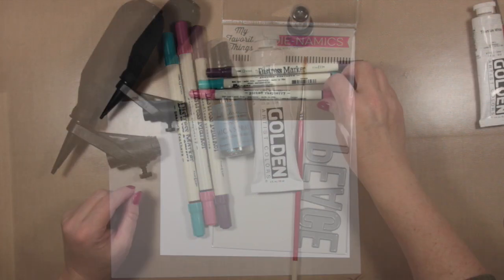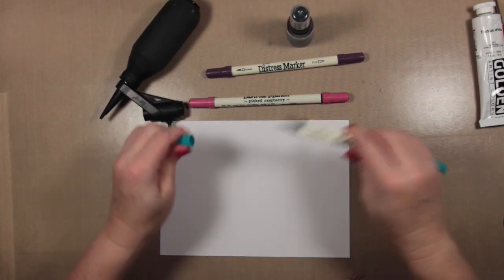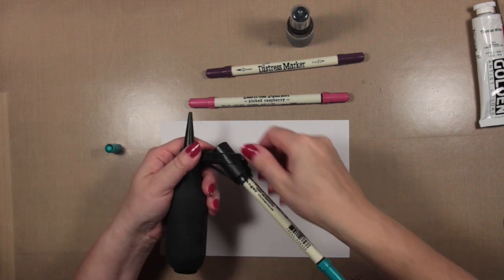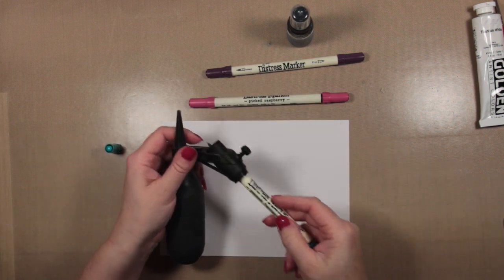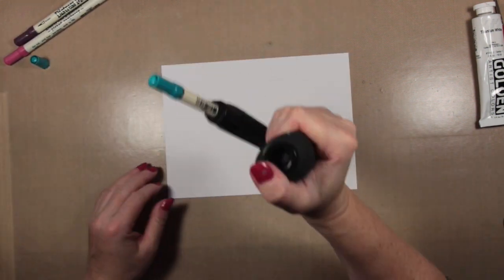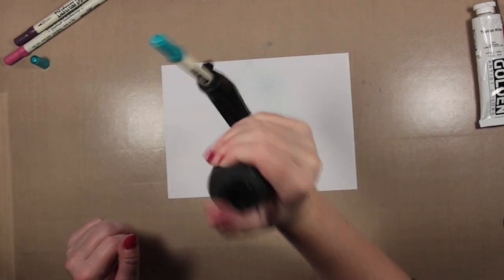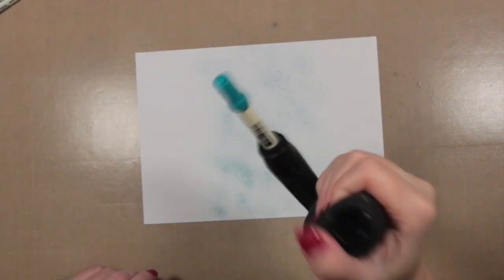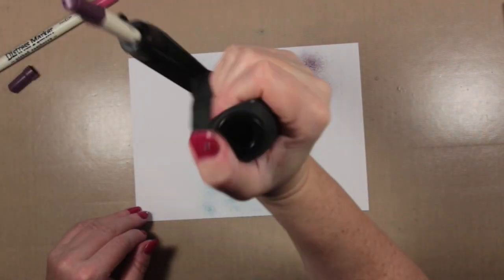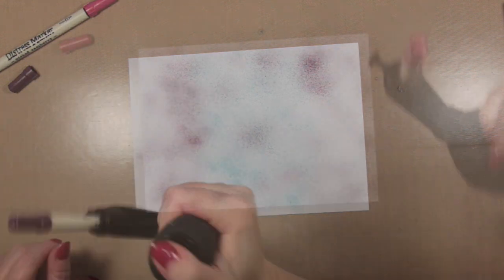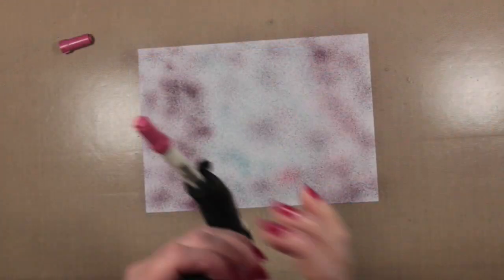These are some of the things I'm going to be using and I will link to everything below the video. I'm starting out with some distress markers and also a spritzer. This is a Tim Holtz product and it allows you to spray ink all over your card. You're not limited just to distress ink pens. You can use a range of pens because the holder can be adjusted.